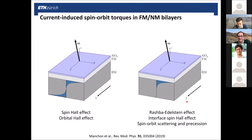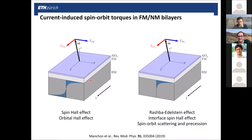The standard model of spin-orbit torques is that you have a bilayer system in which one layer is, for example, a heavy metal with strong spin-orbit coupling. Passing a charge current in this material generates a spin and/or an orbital current. This angular momentum current accumulates at the interface with a magnet, and as it diffuses into the magnet itself, it then induces spin torques. These spin torques can be even or odd in the magnetization, and these are called the damping-like and field-like torques. They can be seen as the absorption of a magnetization current and the action of an effective exchange field on the local magnetization.